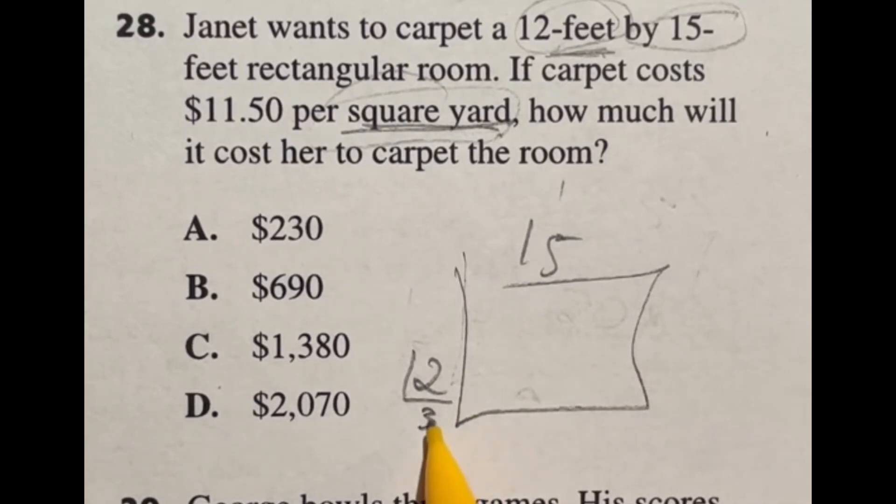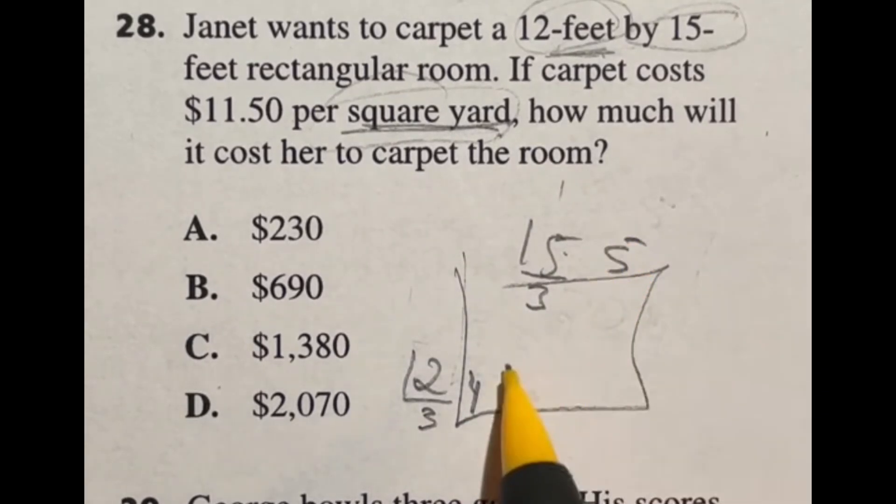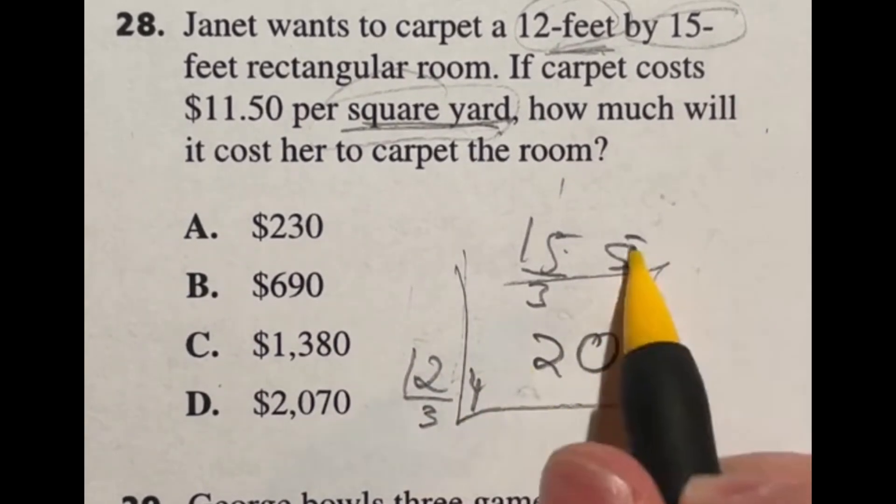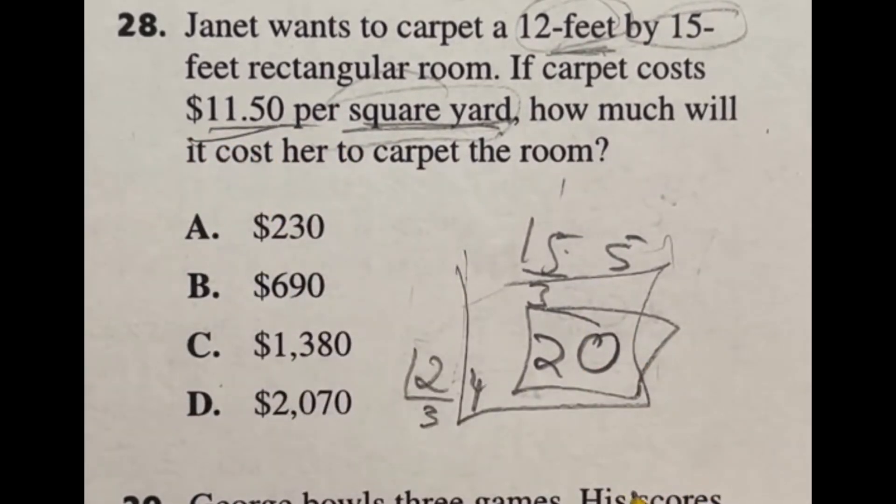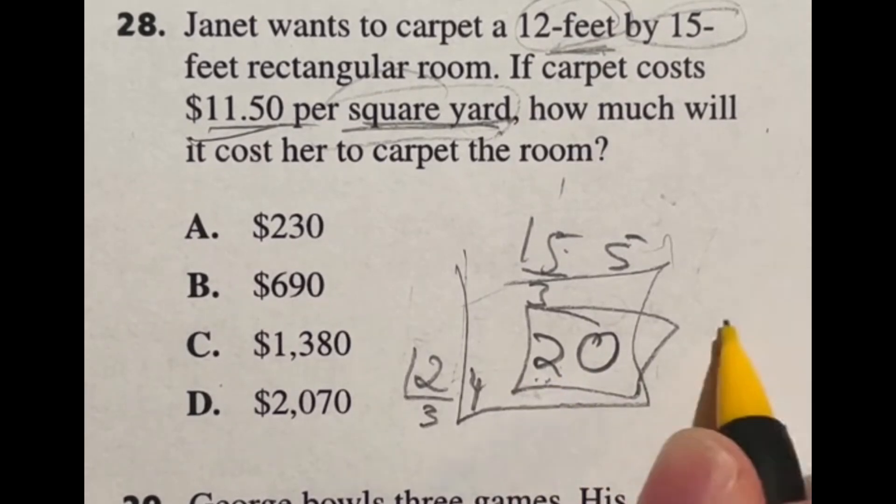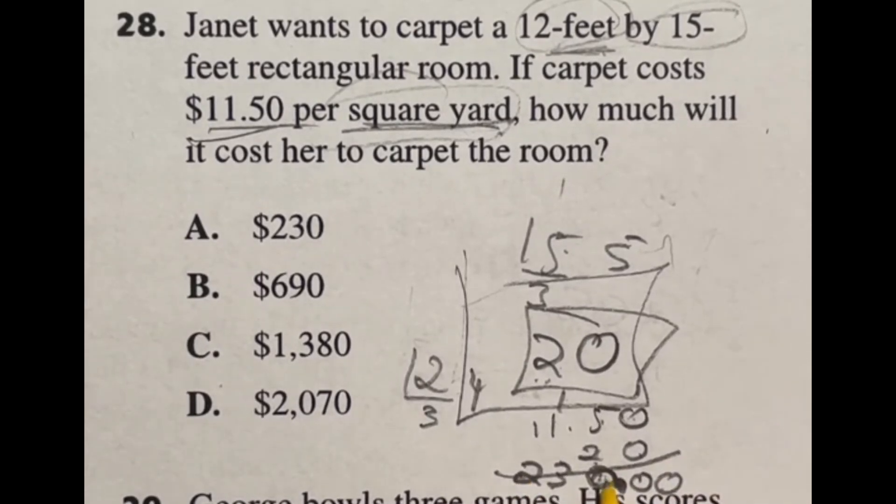12 divided by 3, because there's 3 feet in a yard, gives us 4. And 15 divided by 3 gives us 5. So this is a 4 by 5 yard room. 4 times 5 gives an area of 20 square yards. It's $11.50 per square yard, so we're multiplying 20 by 11.50. The 0 comes down and we multiply everything by 2. 2 times 0 is 0, 2 times 5 is 10. 2 times 1 is 2 plus 1 gives us 3. 2 times 1 is 2. We move our decimal place over twice, which puts us right here. Our final answer is $230, which is answer A.